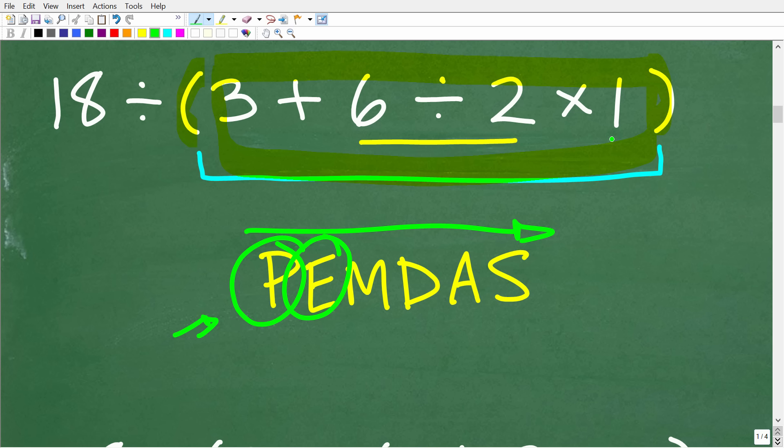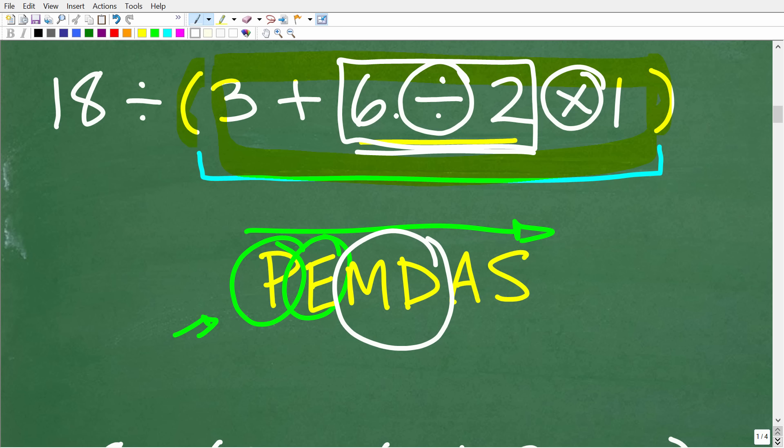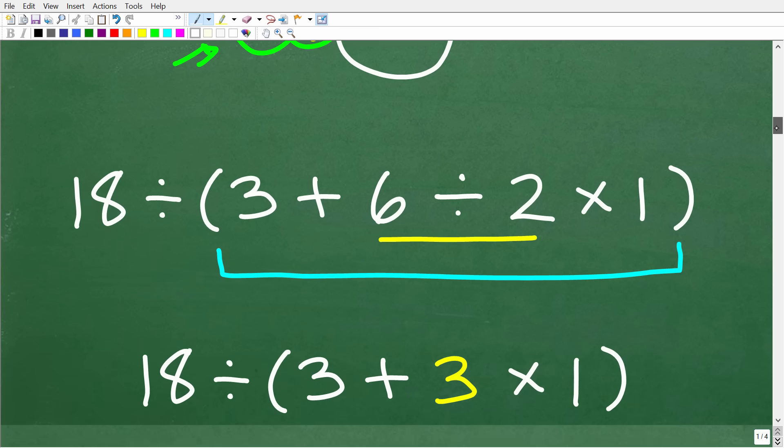So, we're going to move on to the next thing and see if we have any exponents or powers. So, do we have any powers here? No, we do not. So, now we're down to multiplication and division. So, do we have multiplication and division? Yes, we do. We have division and multiplication. So, what do we see first from left to right? Well, we see division first. So, this is the first thing that we need to do. So, we're going to focus in here and do 6 divided by 2.